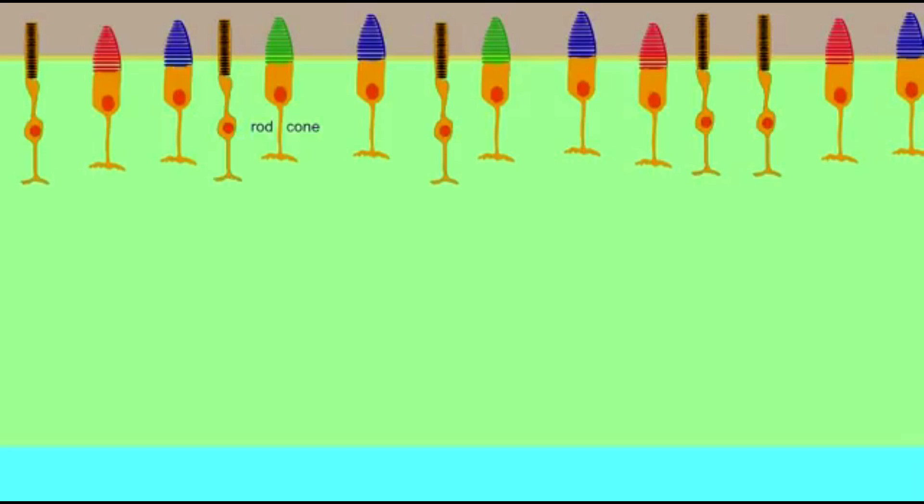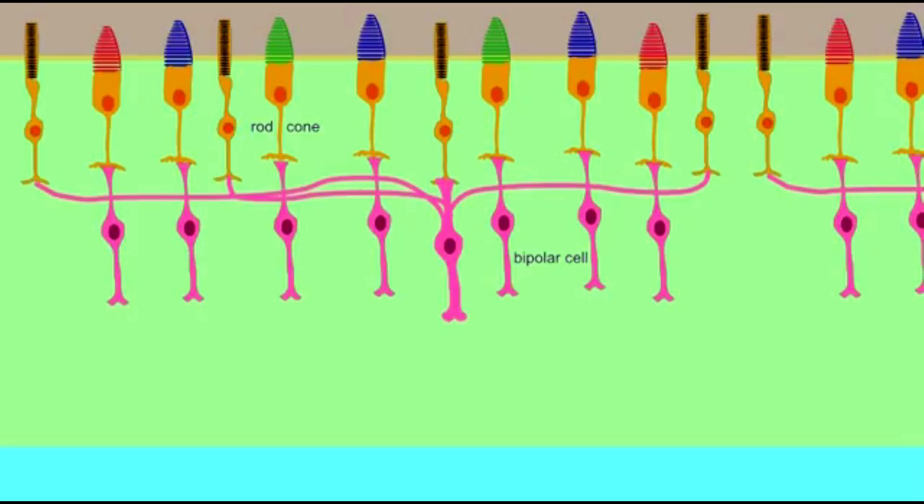This uncommon type of neuron in humans is found in the retina of the eye, where the cell synapse with the rods and cones which perceive light.